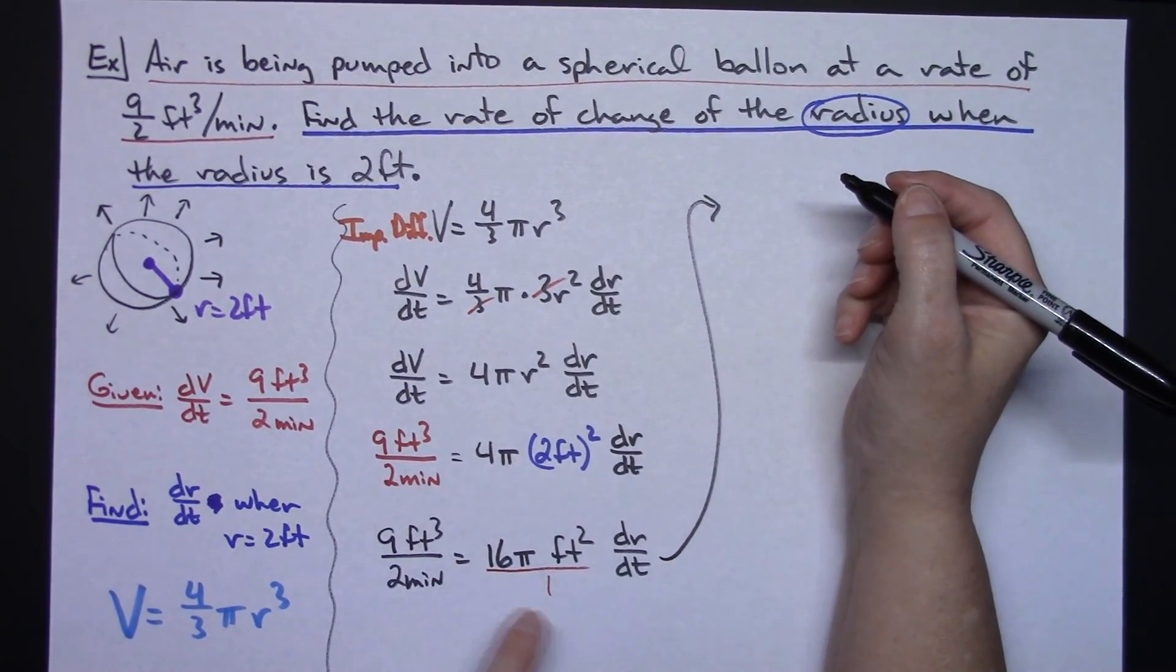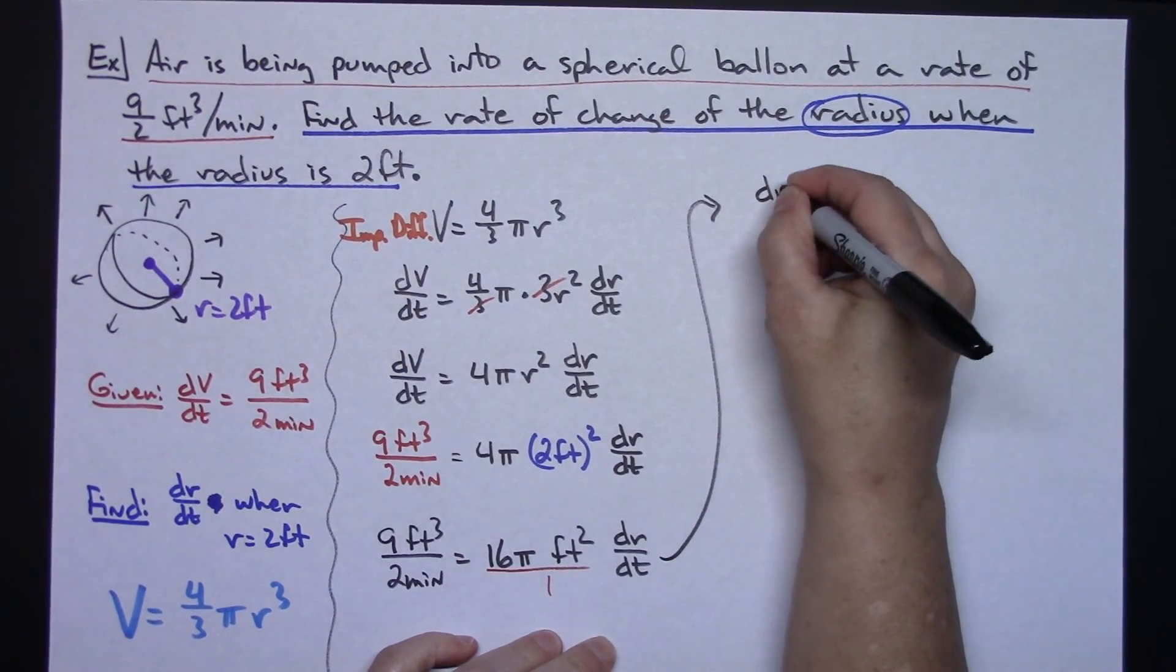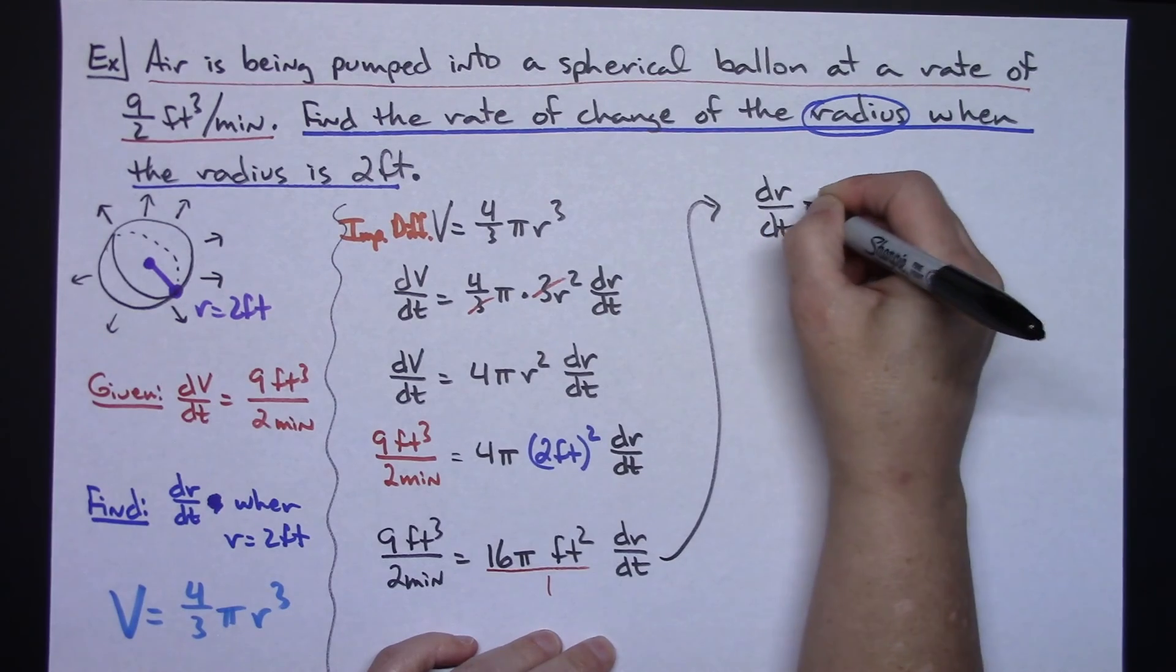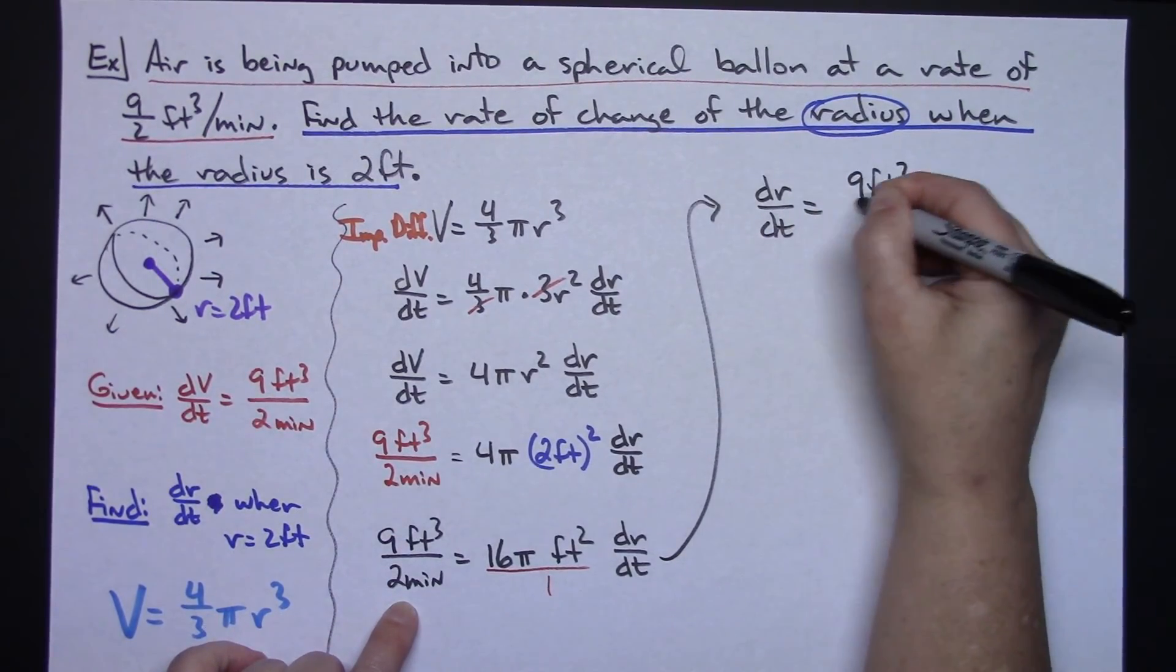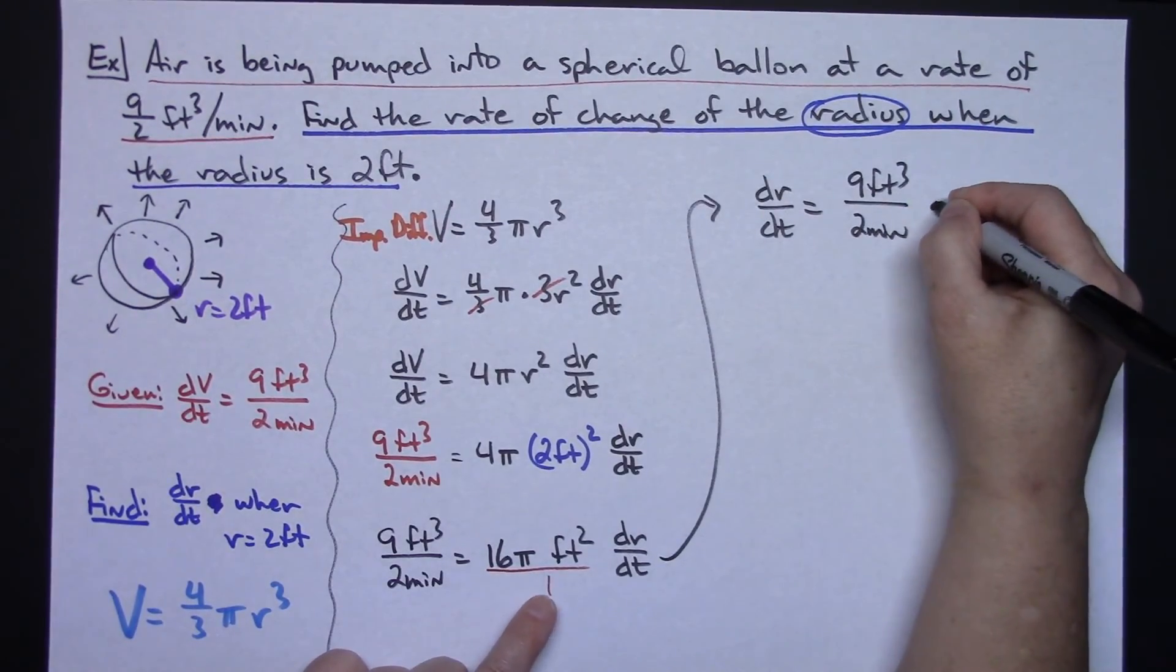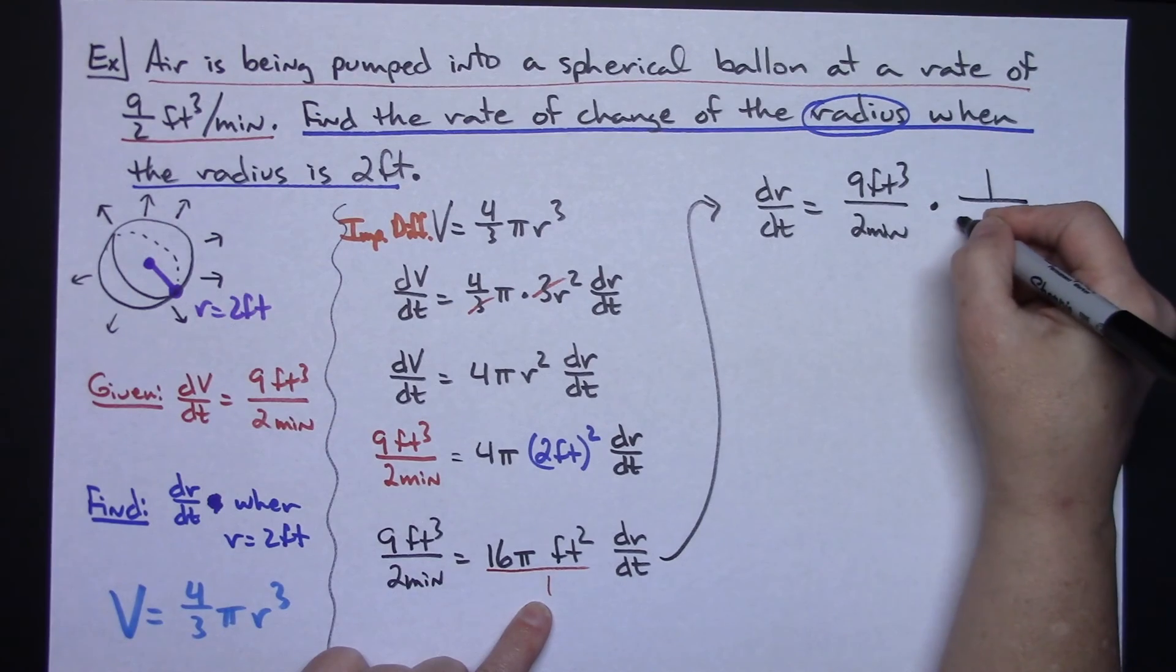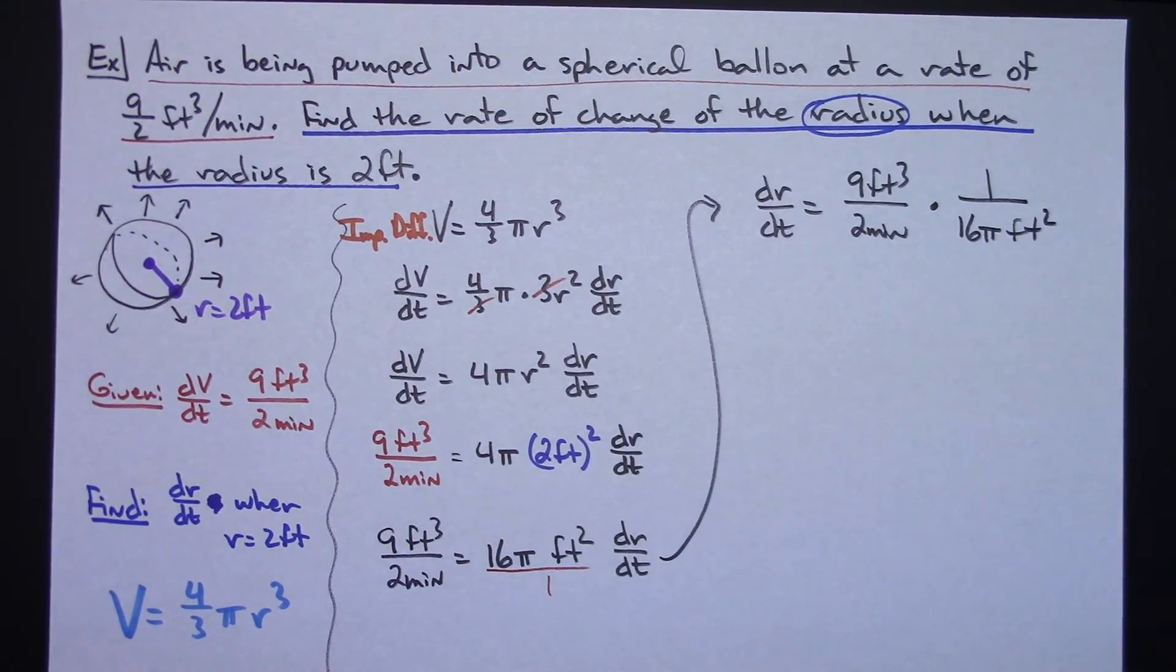So if I'm going to multiply both sides of the equation by the reciprocal, then I'm going to have dr/dt is equal to this 9 feet cubed over 2 minutes times the reciprocal right here, which would be 1 over 16π feet squared.